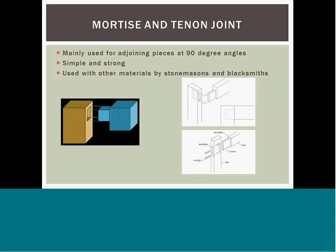The mortise and tenon joint has been used for thousands of years by woodworkers around the world to join pieces of wood, mainly when the adjoining pieces connect at an angle of 90 degrees. In its basic form, it is both simple and strong. The basic mortise and tenon comprises two components: the mortise hole and the tenon. The tenon is found on the end of a member, generally referred to as a rail, and is inserted into a square or rectangular hole cut into the corresponding member. The tenon must fit the mortise hole exactly, and it has shoulders that seat when the joint fully enters the mortise hole. It can be glued, pinned, or wedged into place. This joint technique is also used in stonemason and blacksmith work.